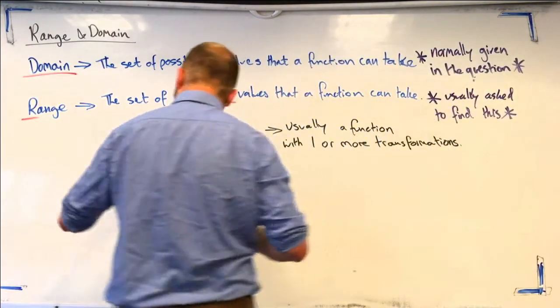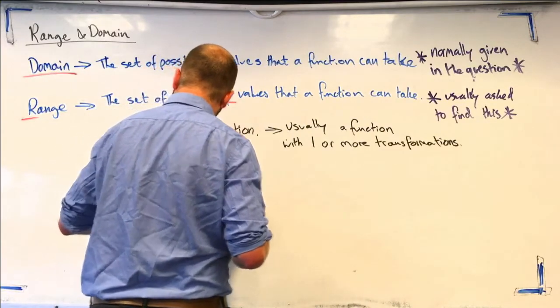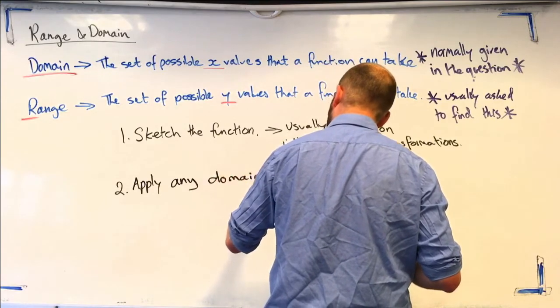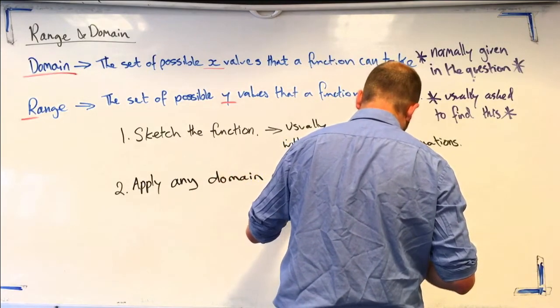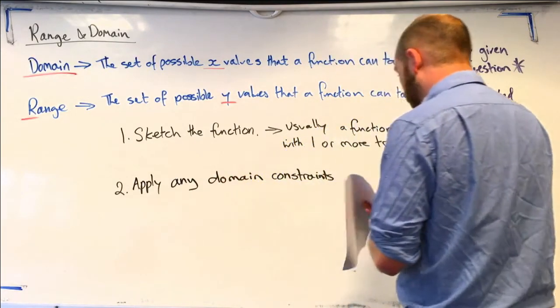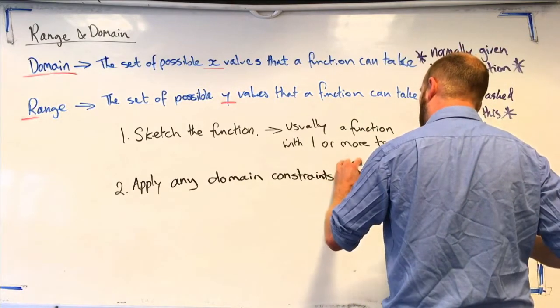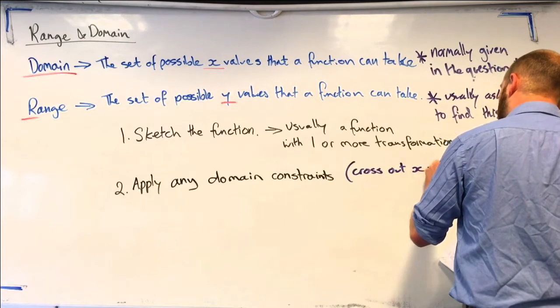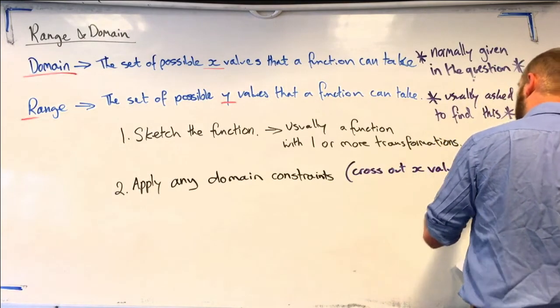So, apply any domain constraints. In other words, we're going to cross out x values not included.